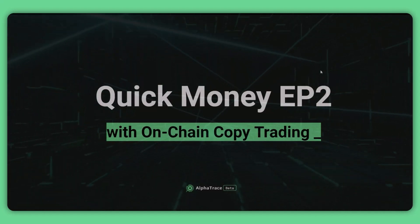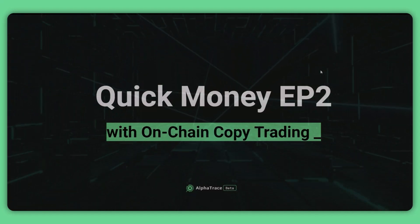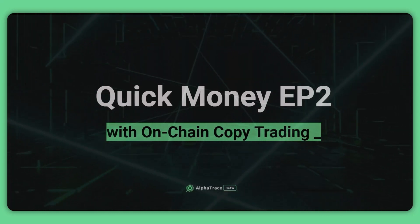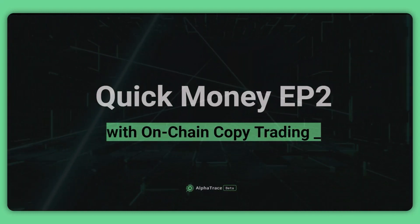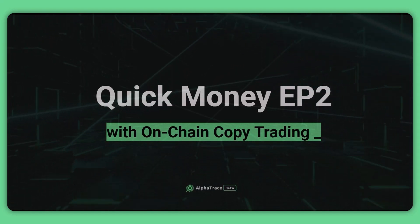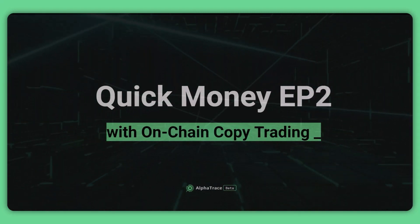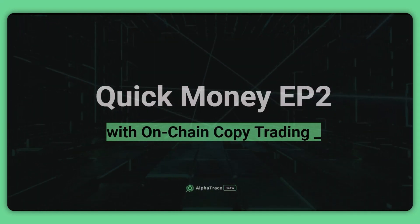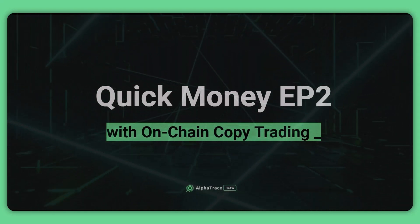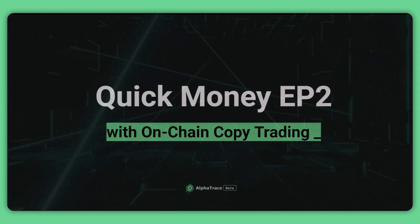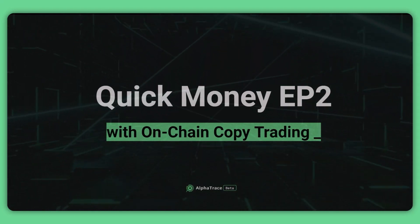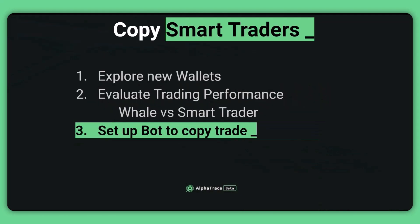Welcome to how to make quick money with on-chain copy trading, episode 2. Let us recap a little bit. To make quick money with on-chain copy trading, you will need to find a smart trader wallet on Ethereum, then copy trade using the same strategies as these wallets. If the wallet that we are copy trading is a real smart trader, we can assume that we can make money and profit using the same strategies as them.